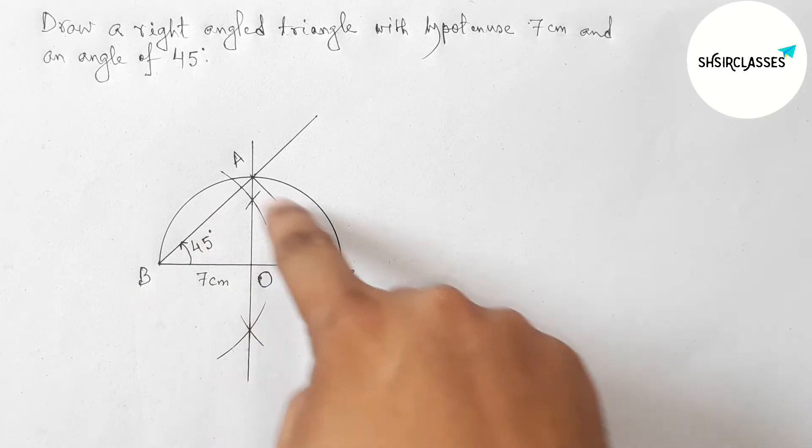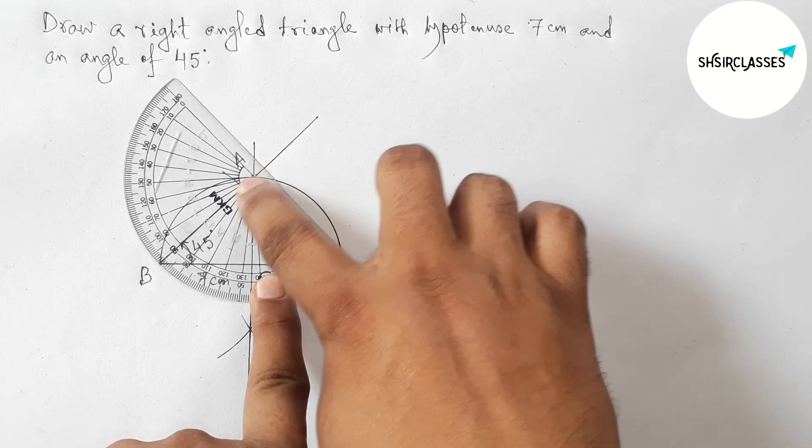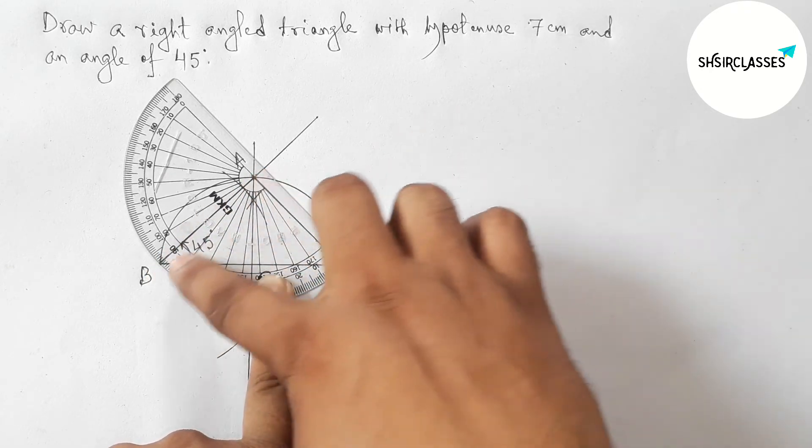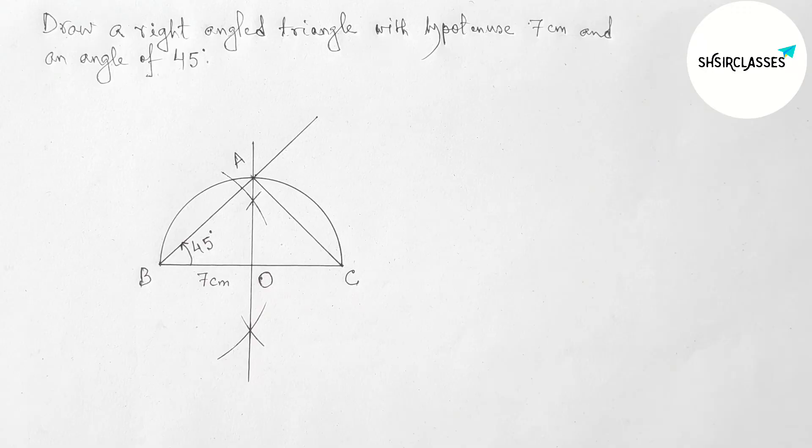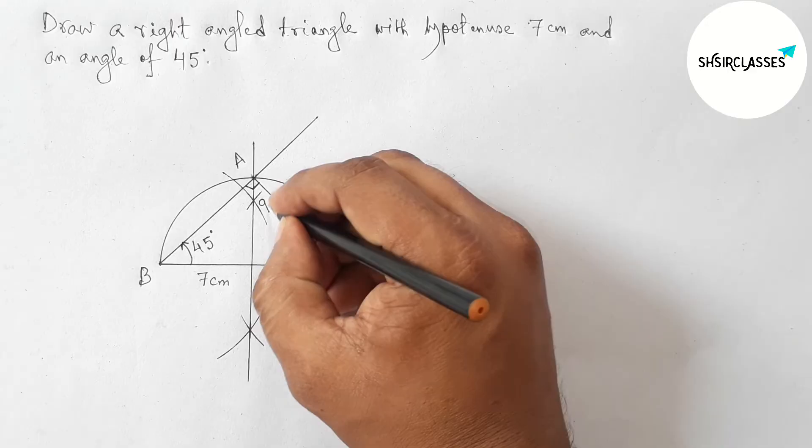So here now checking this angle. So this is perfectly a 90 degree angle, and we know that angle in a semicircle is always 90 degrees. So this is a 90 degree angle.